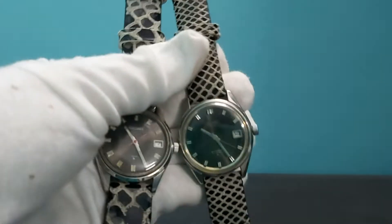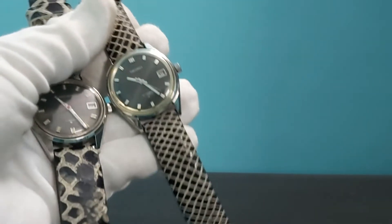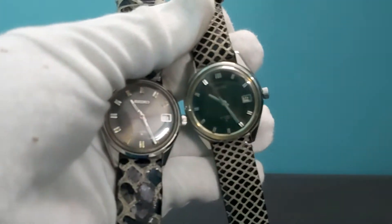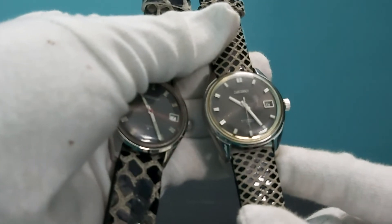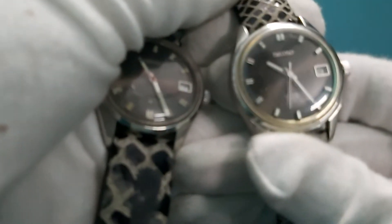This one is also of same model, different straps, handmade straps, except this one has a red second hand and this one is a normal silver second hand. These are 17 jewels.